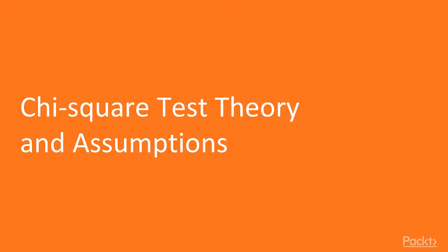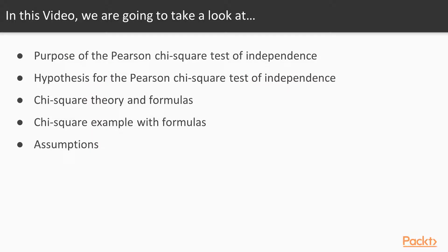In this video, we're going to talk about the theory behind the chi-square test and its assumptions. Specifically, we're going to look at the purpose of the chi-square test of independence — why are we even doing this test? After that, we'll talk about the different hypotheses, then look at the formulas to better understand the mechanics. We'll go through an example applying those formulas, and finally discuss the assumptions of the chi-square test of independence.